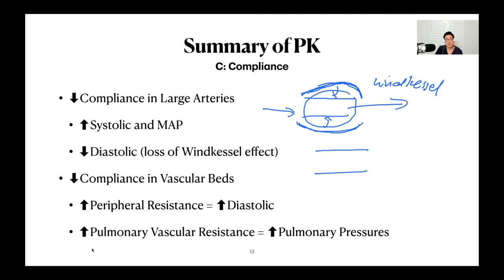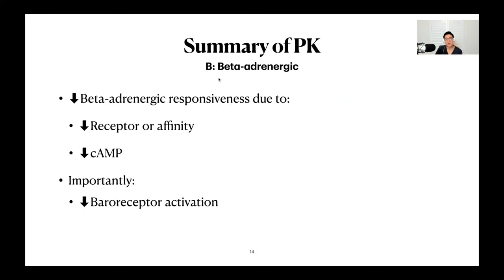There is an increase in pulmonary vascular resistance, which leads to an increase in pulmonary pressures. B is for beta adrenergic: there is a reduction in beta adrenergic responsiveness. The mechanisms are a reduction either in the number of receptors or affinity for those receptors, as well as the second messenger system — a reduction in cyclic AMP generation. Importantly, there is a reduction in baroreceptor activation, which can lead to postural hypotension. That's something you can add to your answer.